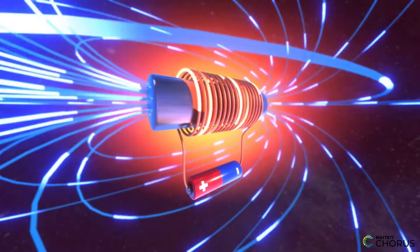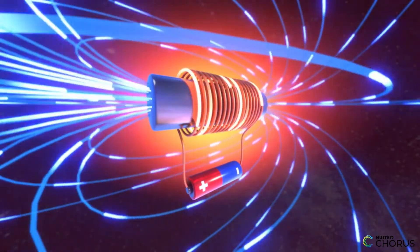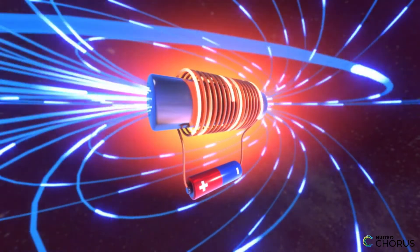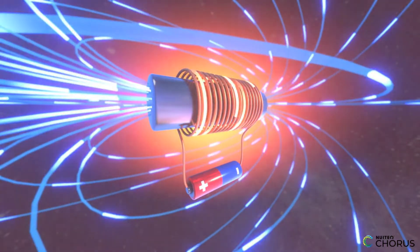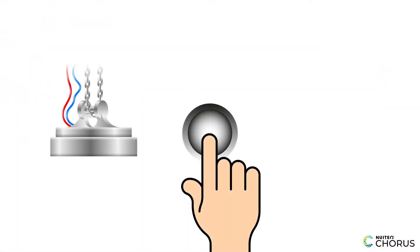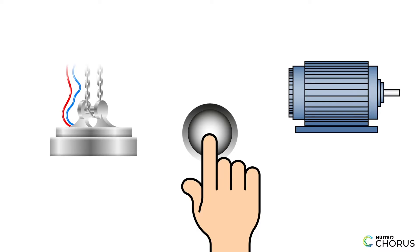Electromagnets are all around us, powering some of the coolest gadgets and machines you use every day. In this video, we'll explore how electromagnets work and see three real-world examples where they're used. You'll learn what makes them so powerful and why they're so important in modern technology.